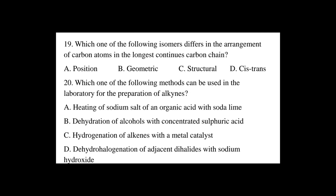Question number 19: Which one of the following isomers differs in the arrangement of carbon atoms in the longest continuous carbon chain? A. position isomerism, B. geometric isomerism, C. structural (chain) isomerism, D. cis and trans isomerism. Position isomerism differs in the position of a double or triple bond. Geometric isomerism differs due to the spatial arrangement of atoms. Structural (chain) isomerism differs in the arrangement of carbon atoms. The correct answer is C, structural isomerism.